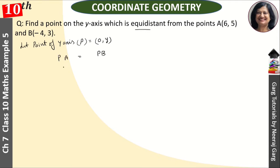If PA and PB are equal, then the squares will be equal. So PA² = PB². We will apply the distance formula: √[(x₂-x₁)² + (y₂-y₁)²].